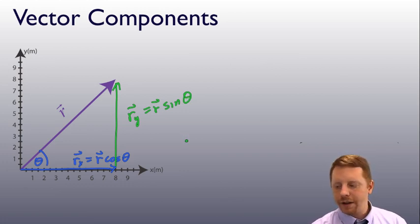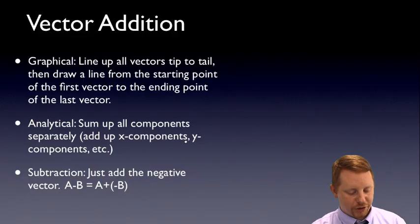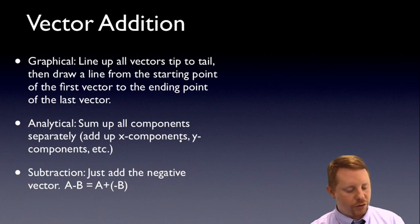So, let's finish up by talking about vector addition and subtraction. Graphically, to add vectors, all you have to do is line up all the vectors that you have that you want to add, tip to tail. Then you draw a line from the starting point of the first vector to the ending point of the last vector. That will give you the vector sum. Analytically, you could just add up all the components separately. Add up all the x components, then add up all the y components, add up all the z components.